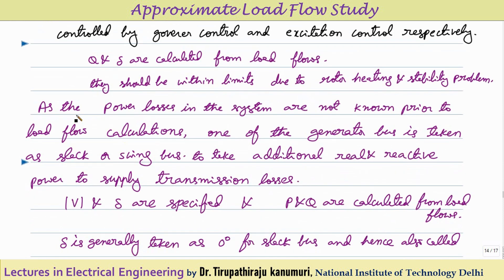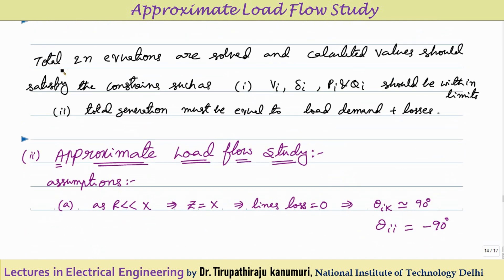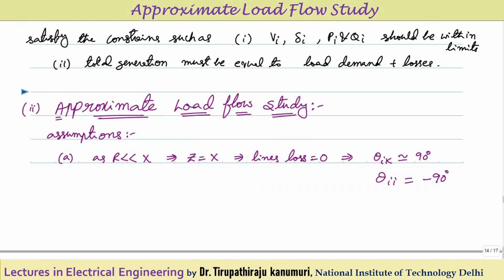Since transmission losses are not known prior to load flow calculations, one generator bus is taken as the slack or swing bus to supply the additional active and reactive power for losses. For the slack bus, V is specified and δ is taken as 0 degrees (reference), and P and Q are calculated from the load flow study.